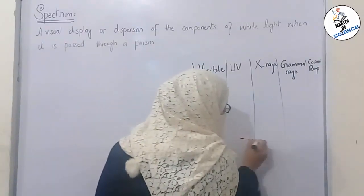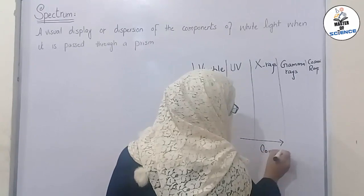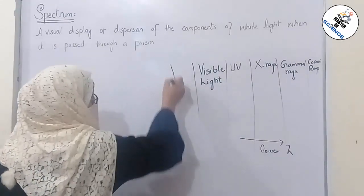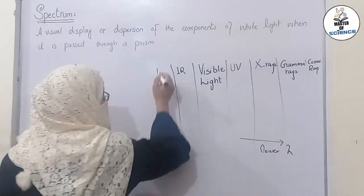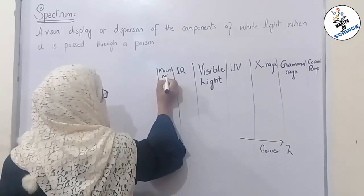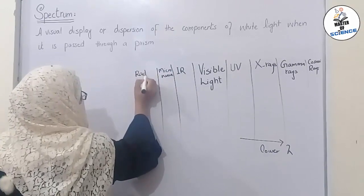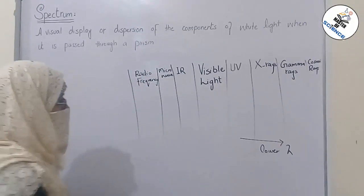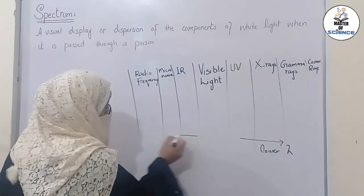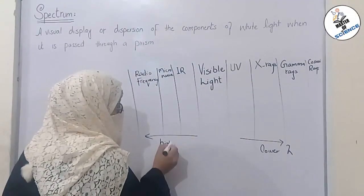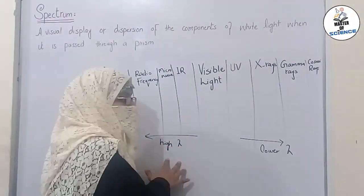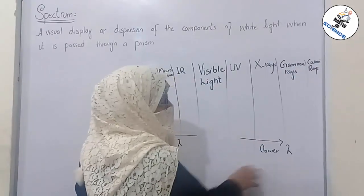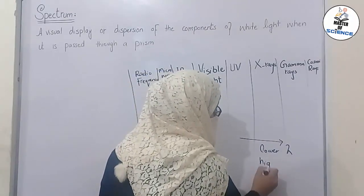These are towards the lower wavelength side. On the other side of the visible light, IR, microwave, and radio frequency waves are present — they go towards higher wavelength. Wavelength and energy are inversely proportional to each other, so if a radiation has low wavelength, it means it has high energy values.